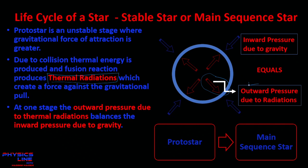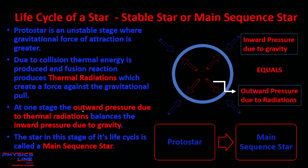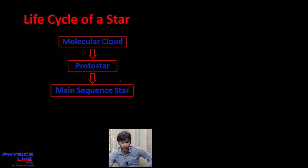At one stage, this outward pressure due to thermal radiation becomes large enough to balance the inward pressure due to gravity. At this stage we say the star has achieved a stable state, and we call this the main sequence star. A star becomes stable when thermal pressure equals gravitational pressure.